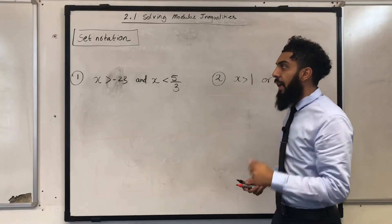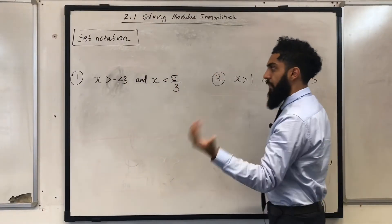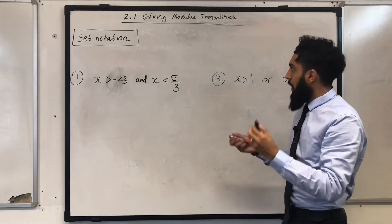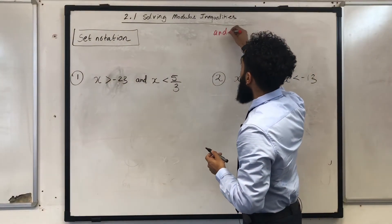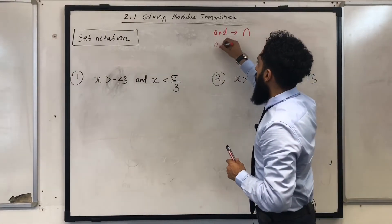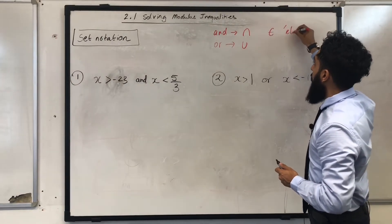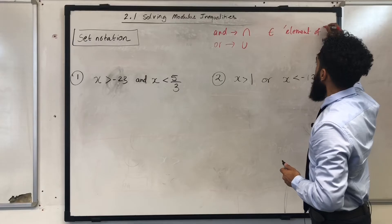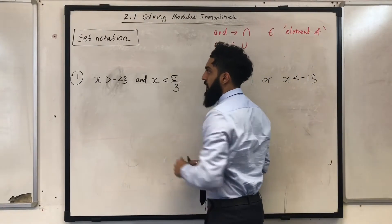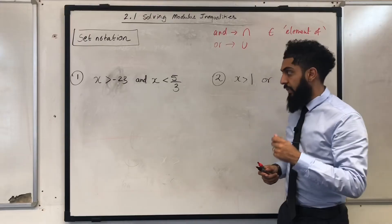Ladies and gents, you could be examined on set notation. Let's look at the basics. The word 'and' is used for intersection. The word 'or' is used for union. The symbol ∈ represents 'element of.' Now let's apply this to questions 1 and 2 — we'd like to write x is greater than minus 23 and x is less than 5 over 3 in set notation.